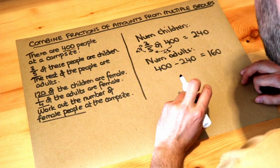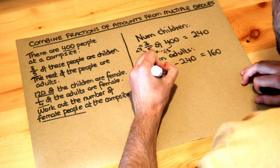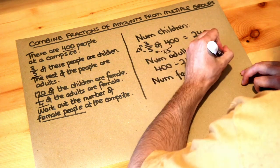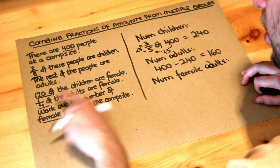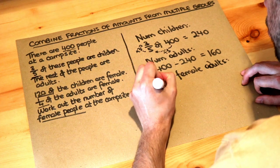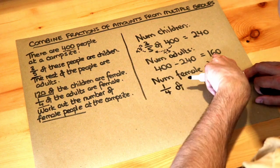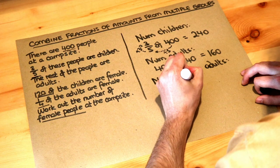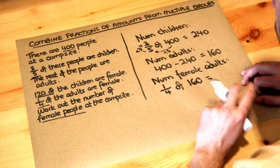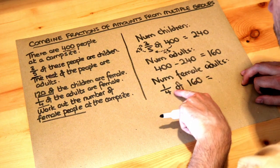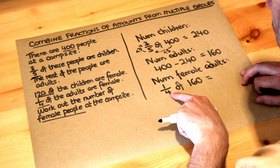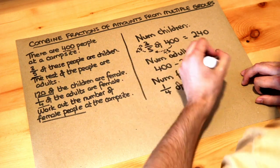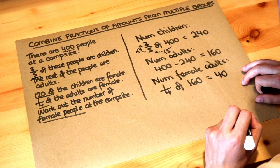So we've got a quarter of the adults are female, so to find the number of female adults is going to be a quarter of the adults, a quarter of, and how many adults are there? Well we worked it out, it was 160. And to find a quarter of 160 you just divide the 160 by the 4 which is 40. 40 times 1 is still just 40, so there's 40 female adults.